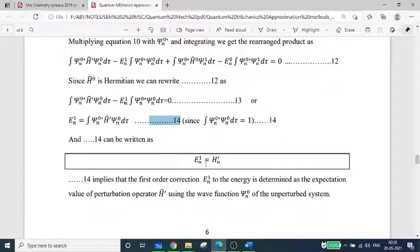When you are in the same time, en1 is equal to h cap prime expectation value. We can write the cap in the same way. This is the first order correction to energy.